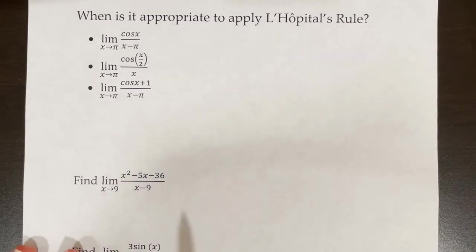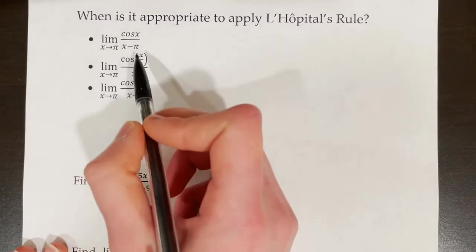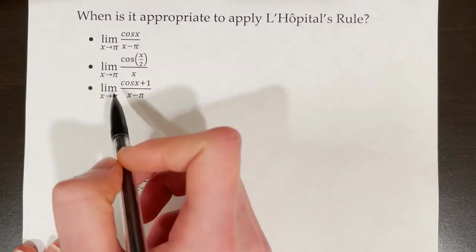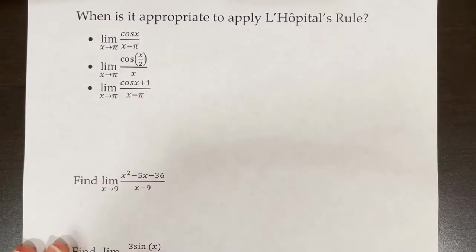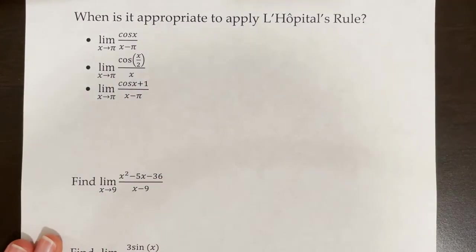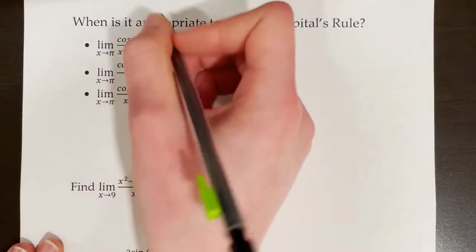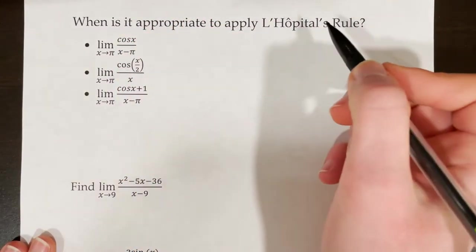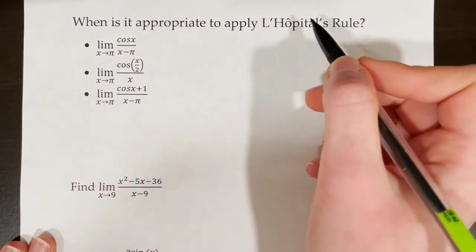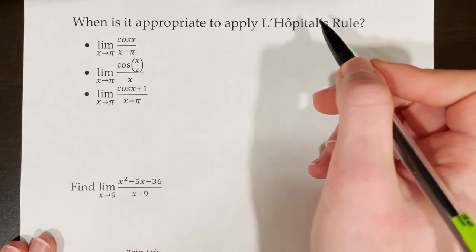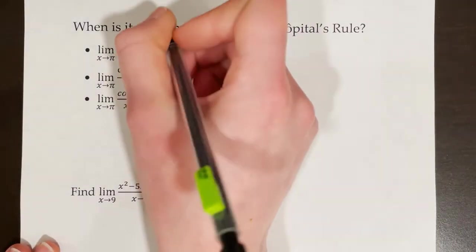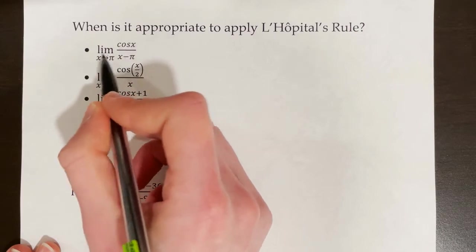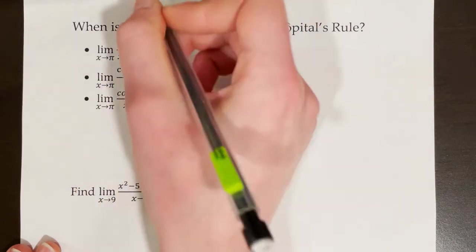Let's practice determining when it's appropriate to apply L'Hôpital's rule. We have three examples and need to determine which ones require it. Remember, we can only use L'Hôpital's rule when we have indeterminate forms — 0/0 or ±∞/∞. Our first step is always to test the limits of the numerator and denominator separately.